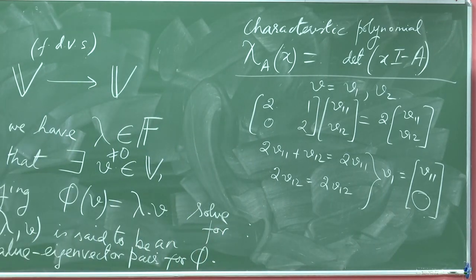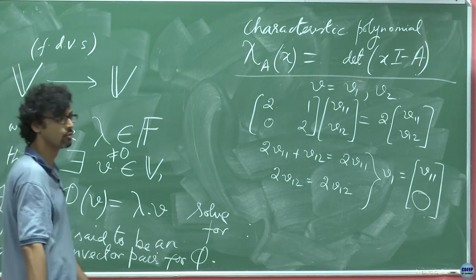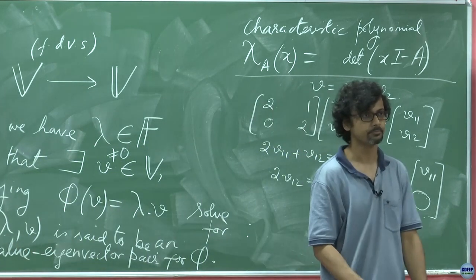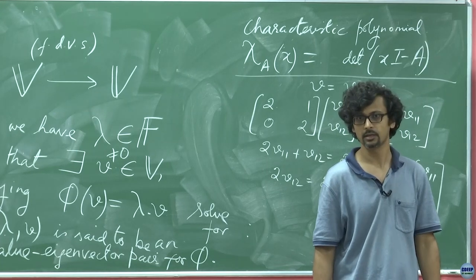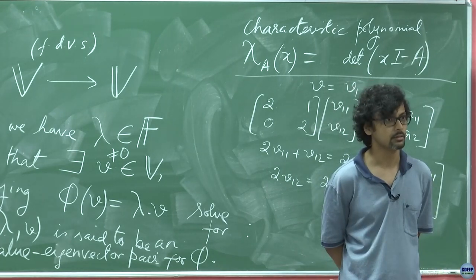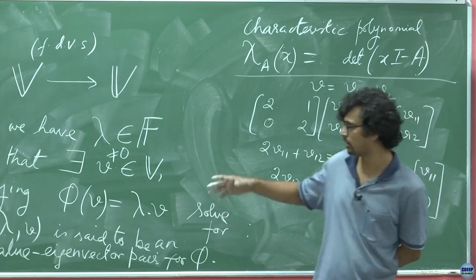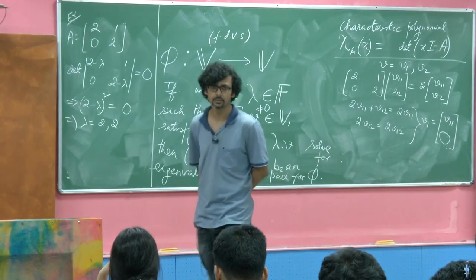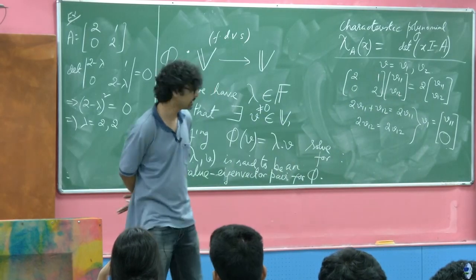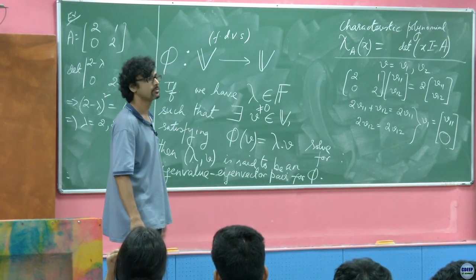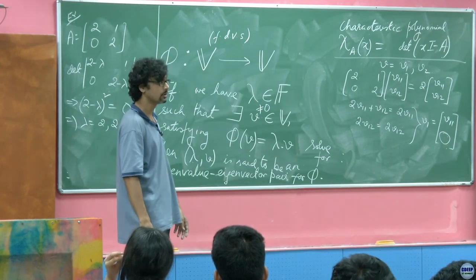This means we cannot diagonalize this matrix the way we outlined in the previous lecture. We are stuck. This is precisely the problem with repeated eigenvalues — you may not be able to find enough linearly independent eigenvectors.